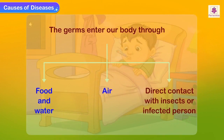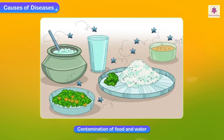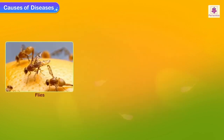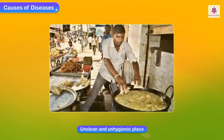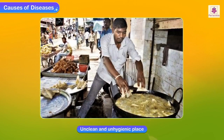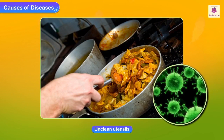Germs enter our body through food and water, air, direct contact with insects, or an infected person. Food and water get contaminated by flies, cockroaches, dirt, and dust. Food which is not cooked in a clean and hygienic place will carry germs. People who cook may not use clean utensils, and germs would enter the food they handle.